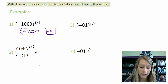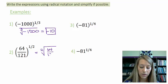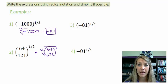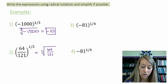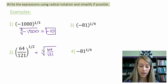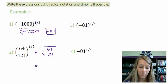Number two is a fraction, but no big deal. The one-half power simplifies to the square root of 64 over 121. When we write square roots we don't write the index 2. So this is the square root of 64 over 121. I can take the square root of each individually, giving a final answer of 8 over 11.